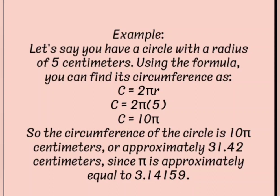So the circumference of the circle is 10 pi centimeters, or approximately 31.42 centimeters, since pi is approximately equal to 3.14159.